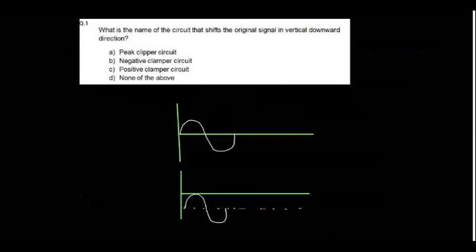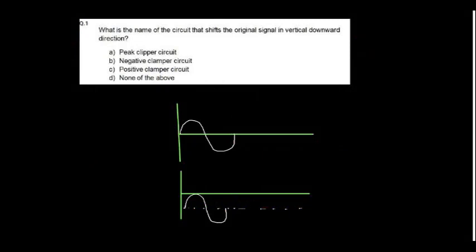First question. What is the name of the circuit that shifts original signal in vertical downward direction? For the signal shifting, if you want to shift the signal downwards, we use negative clamper circuit.